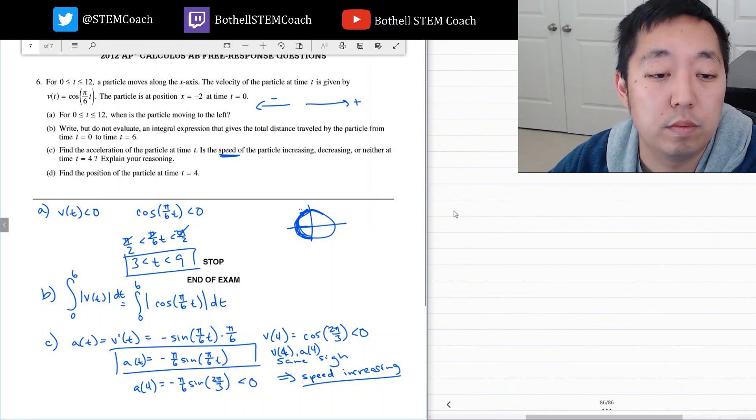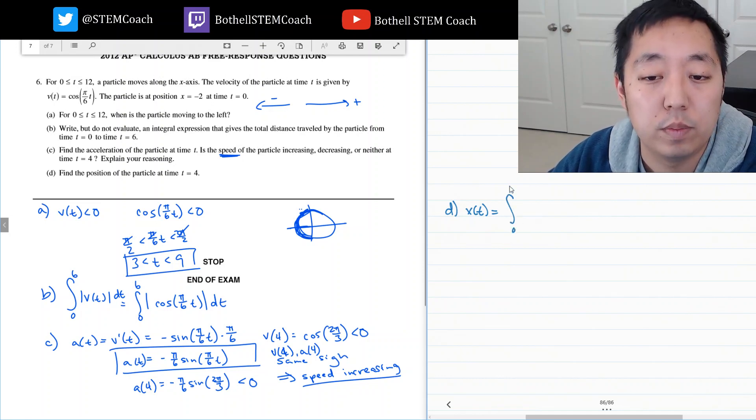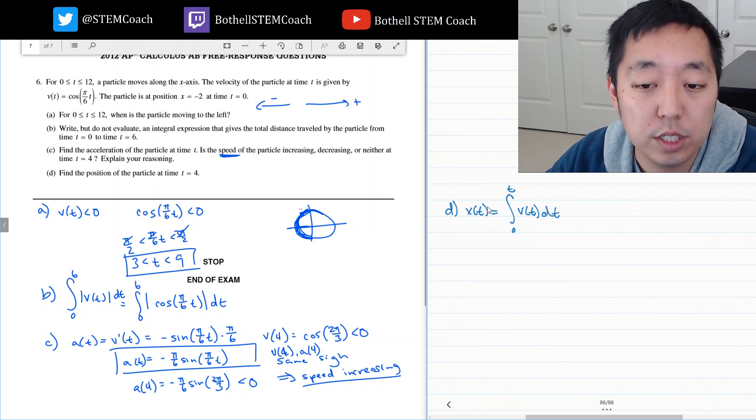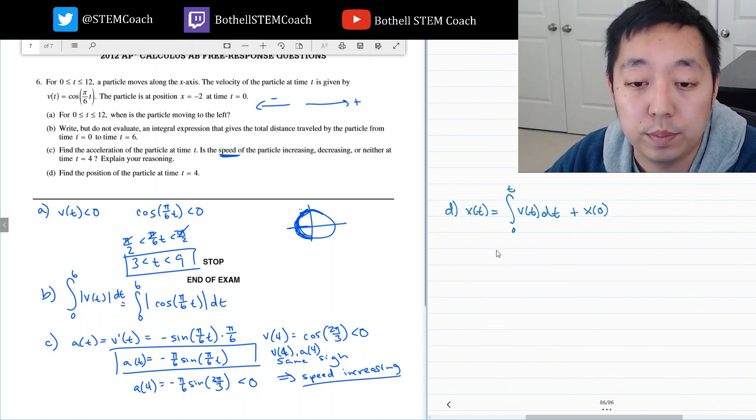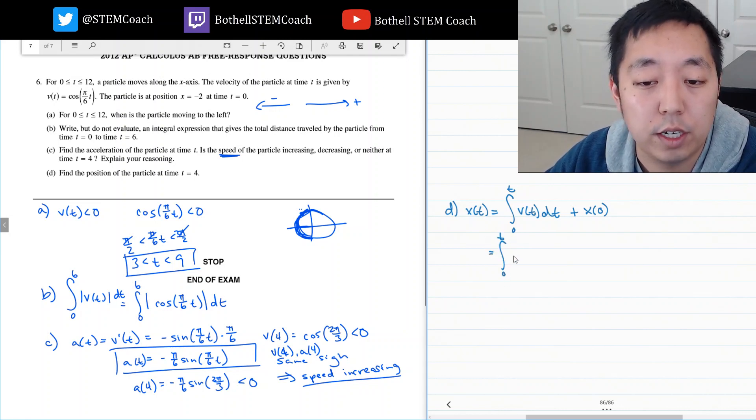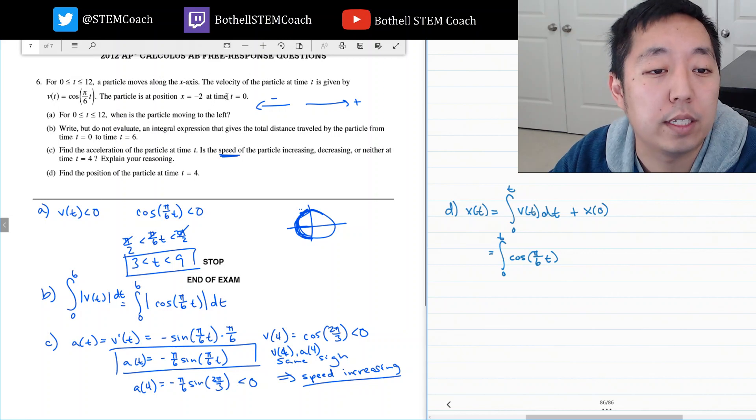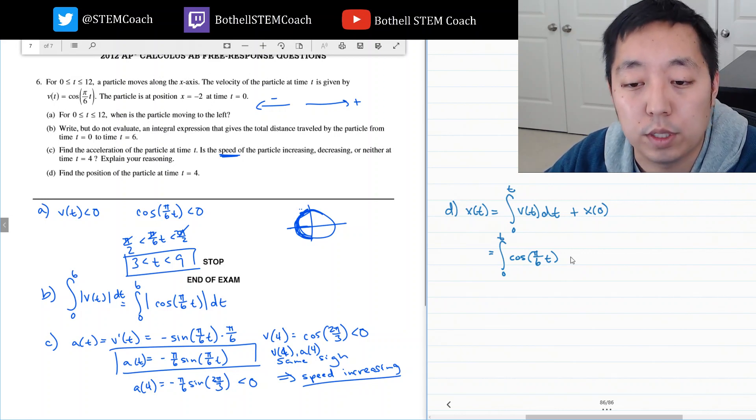Find the position. I need to find x of t. x of t is always the integral of v of t. That's the change in position. But I have to add in x of 0 if I go from 0 to t. So that's the integral from 0 to t of cosine pi over 6t. And x of 0, they said at time t equals 0, the initial position is negative 2, so this is minus 2.